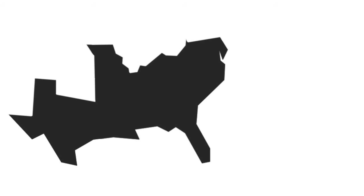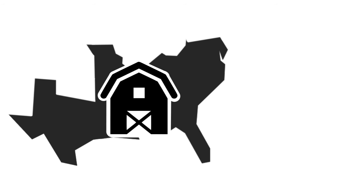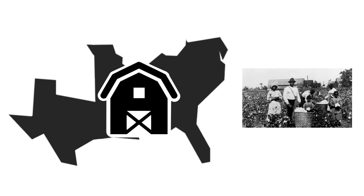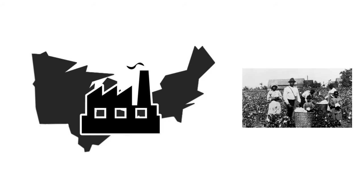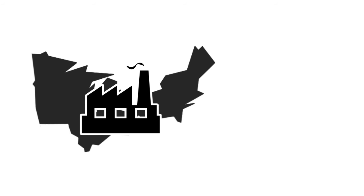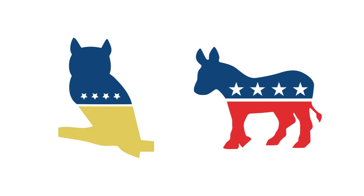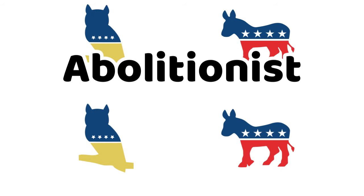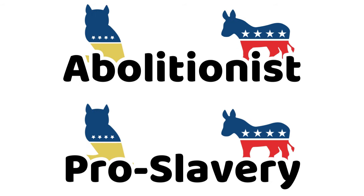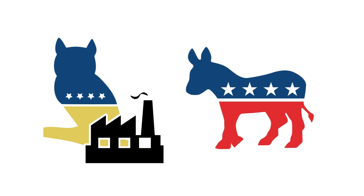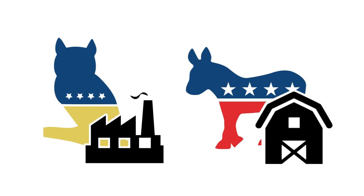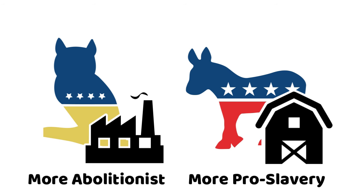Since the Southern economy was heavily based on agriculture, it relied on slavery in order to keep afloat, while the more industrial North pushed back, advocating for the liberation of the slaves. As time went on, the issue of slavery continued to grow, which eventually tore both political parties apart between abolitionist factions in the North and pro-slavery factions in the South. And since the Whigs favored industrialization and the Democrats agrarianism, this made the Whigs more abolitionist and the Democrats more pro-slavery in both regions.